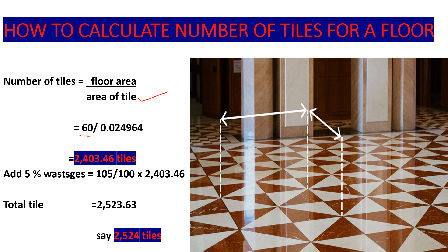Those are the tiles you're going to need for your area. But remember, when we are laying the tiles, we encounter wastage. So we are going to allow for a certain percentage of wastage. For this case, I'm using 5 percent wastage. So that is 105 over 100 times the number of tiles, which was 2,403.46, giving us 2,523.63. Of course, we are going to get a round figure.